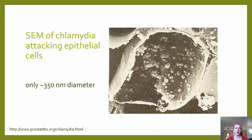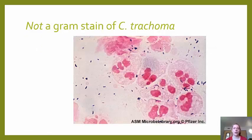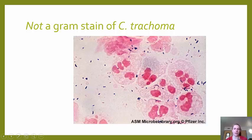One reason it was hard to identify Chlamydia is that the bacteria are very small — only about 350 nanometers in diameter — so a normal microscope won't pick them up. Here is a scanning electron microscope image of Chlamydia attacking epithelial cells; those extracellular forms are the elementary bodies. A gram stain of Chlamydia trachomatis cannot actually show the organism — the purple things visible are other organisms, as Chlamydia is too small to see.